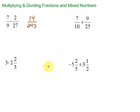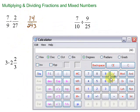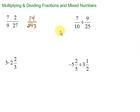Now, can we simplify that? 14 is divisible by 2, but 243 is not because it's odd. 14 is also divisible by 7. Let's see if 243 is. Nope. And 243 is not divisible by 14 either. Let's just double check. Nope. So our fraction is in simplest form, and we're done with that one.